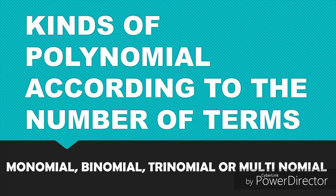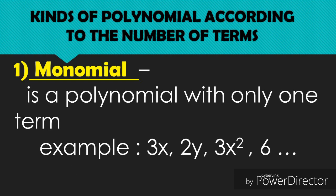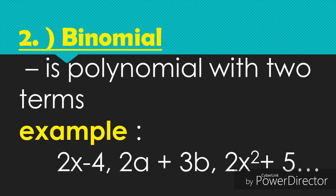Let's study the kinds of polynomials according to the number of terms. We have the monomial, binomial, trinomial, or multinomial. Number one is monomial — it is a polynomial with only one term. Examples: 3x, 2y, 3x squared, and 6.